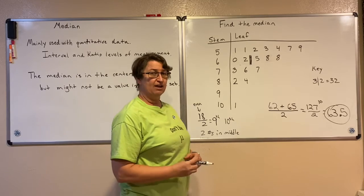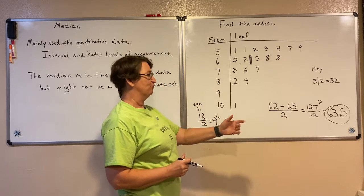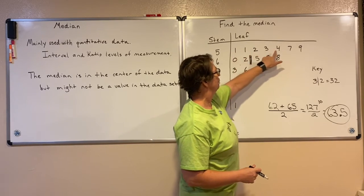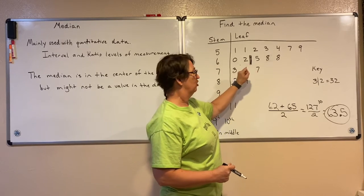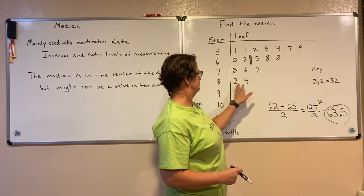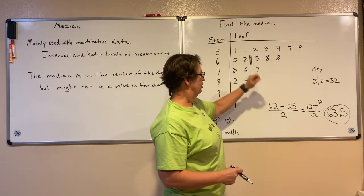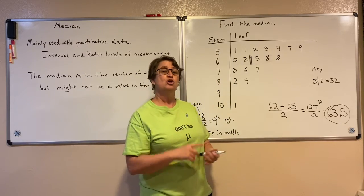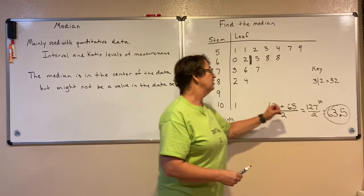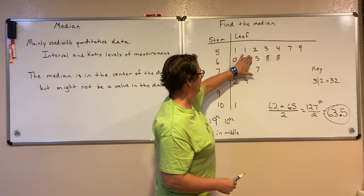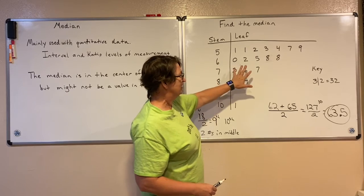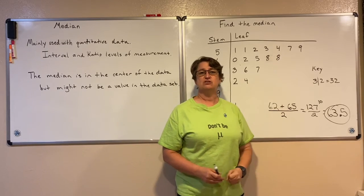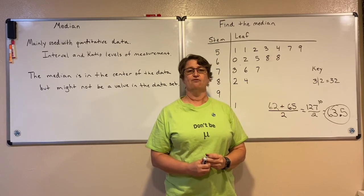That's your median. If that's true, we should have half below and half above. Let's check — there are 9 below and 9 above. Sure enough, 63.5 is the median of this data set. Notice that 63.5 is not a number on my stem and leaf plot — there aren't any decimal numbers on it. So the median is just the number right straight in the center of that data; it doesn't have to be part of the data set.